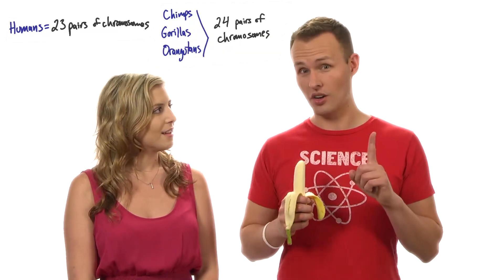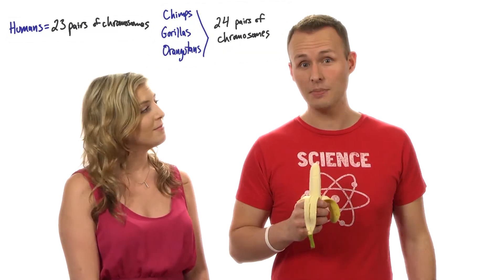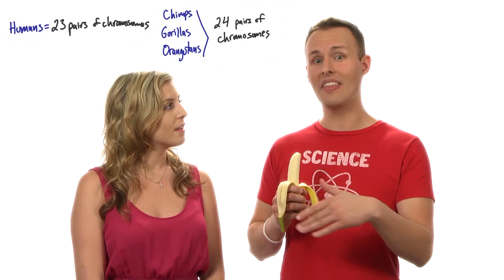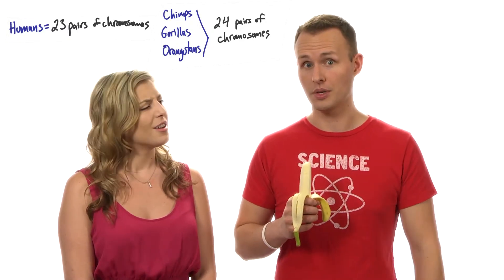And how many pairs of chromosomes do you think they have? Well, I mean, if they're our closest relatives, and we have 23, I'd assume they had 23 too, right? Well, you might think that, but you'd be wrong. We humans are the exception. We have 23 pairs of chromosomes, and they all have 24 pairs of chromosomes.